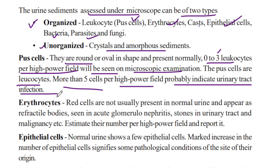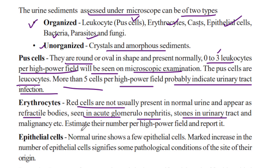That is infection. Red cells are not usually present in normal urine. They appear as a refractile body and are seen in acute glomerulonephritis, stones in the urinary tract, and malignancy.